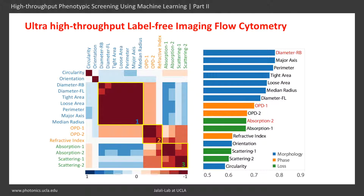The ranking of biophysical features based on their accuracy in single feature classification is shown on the right. Blue bars show performance of the morphological features, which include diameter along the interrogation rainbow, diameter along the flow direction, tight cell area, loose cell area, perimeter, circularity, major axis length, orientation, and median radius. Orange bars show optical phase shift features: optical path length differences and the refractive index difference. Green bars show optical loss features representing scattering and absorption by the cell. The best performing features in these three categories are marked in red. As expected, morphology contains the most information, but other biophysical features can also contribute to improved performance of label-free phenotypic screening.